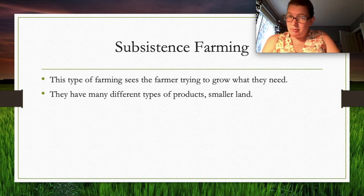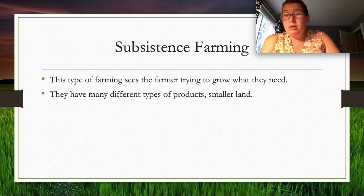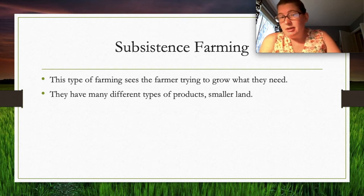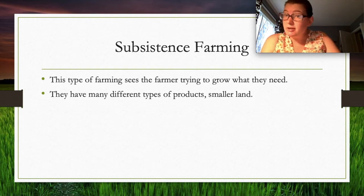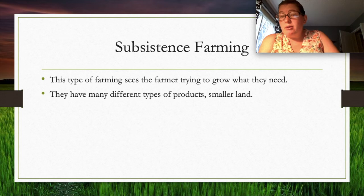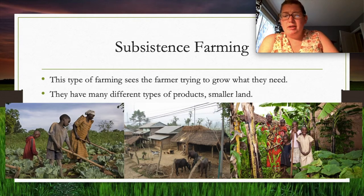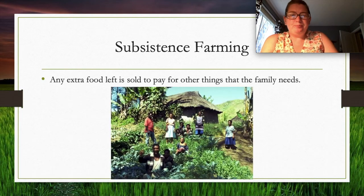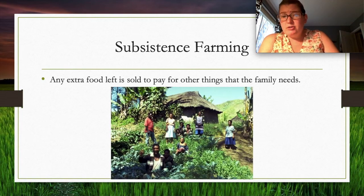Subsistence farming is the oldest type of farming, dating back to the agricultural revolution when humans settled in one place and began farming. It had been declining but has seen a resurgence, especially during the pandemic when access to food was uncertain. Any extra food produced is sold to pay for things you can't grow yourself — for example, in Canada you can't grow coffee, so you'd sell surplus to purchase it.